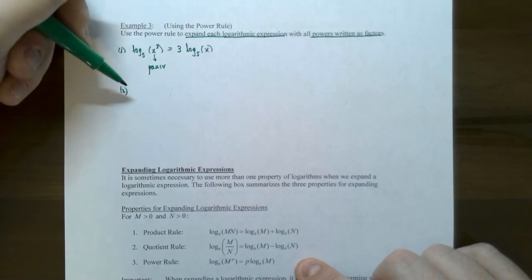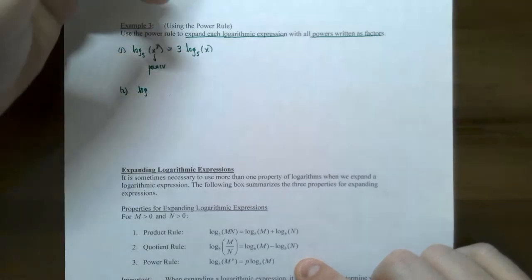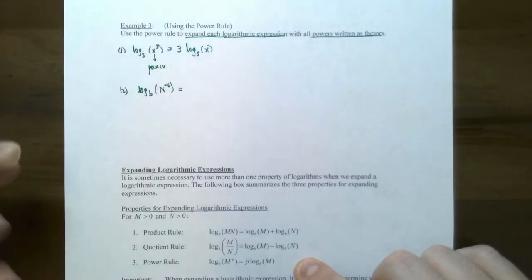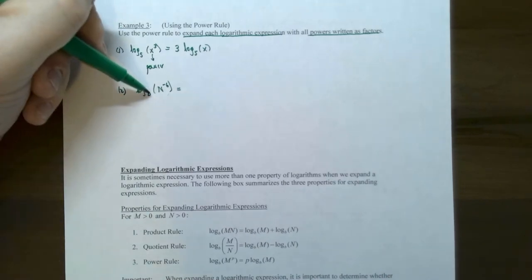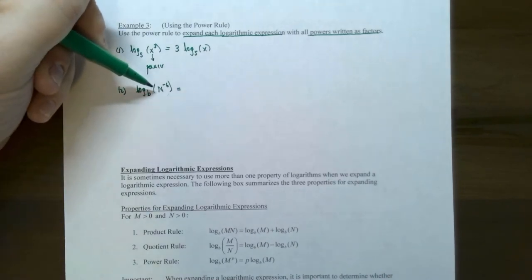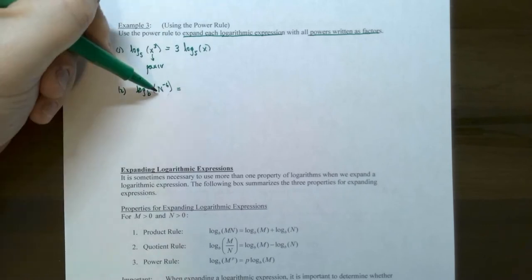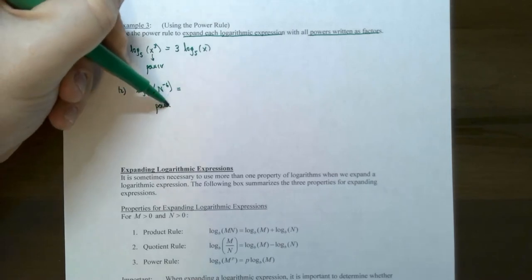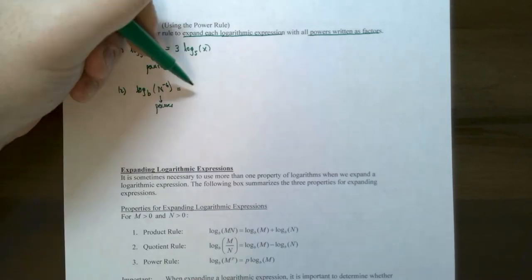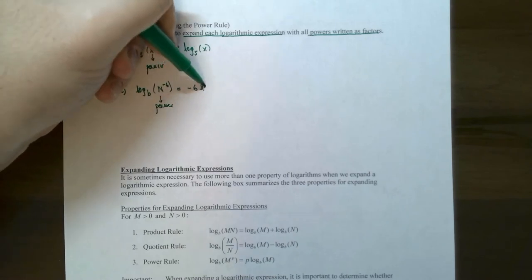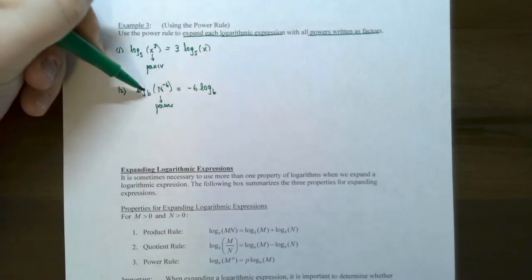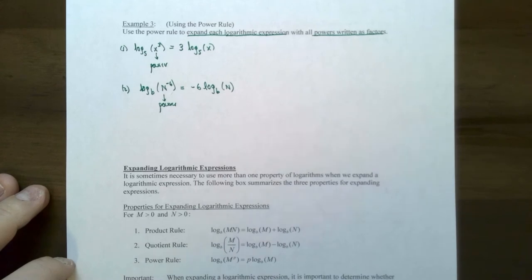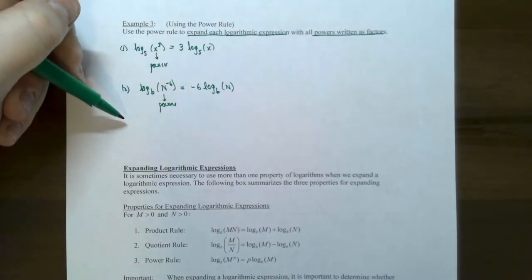Number two: log base b of n to the negative six. The base must be positive and not one, and n is the variable raised to a power inside the argument. Take negative six and pull it to a coefficient: negative six times log base b of n. That's simplified completely because we don't know what n or b is.